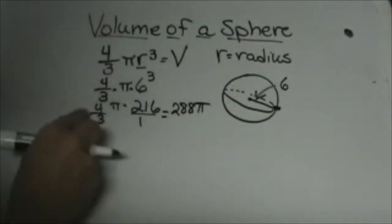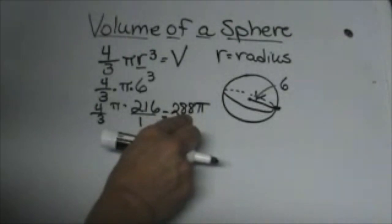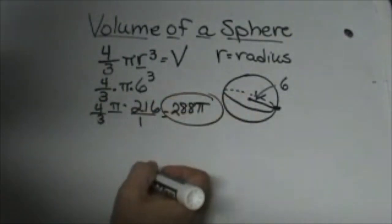So grab your calculators and practice that. 4 times 216 divided by 3 is 288, and then the pi just comes over and that is our answer.